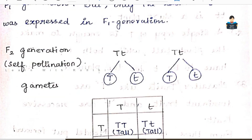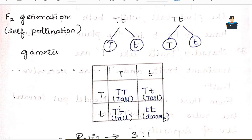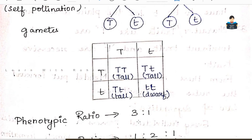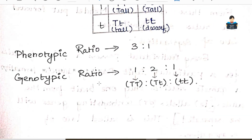In the F2 generation, after self-pollination of the F1 plants (Capital T, small t crossed with Capital T, small t), the gametes formed are Capital T and small t from each parent. The result is three tall plants and one dwarf plant. The phenotypic ratio is 3:1, and the genotypic ratio is 1:2:1.